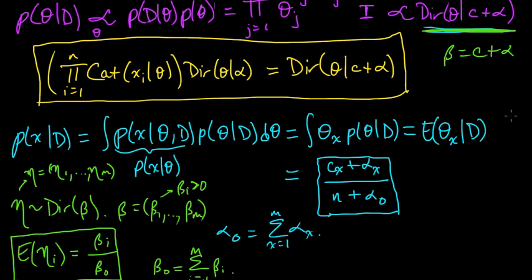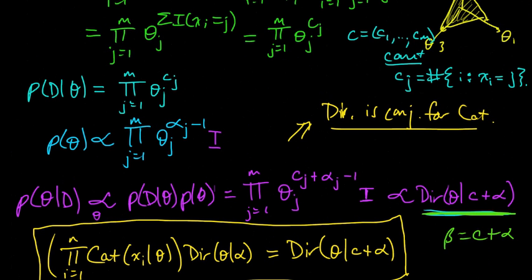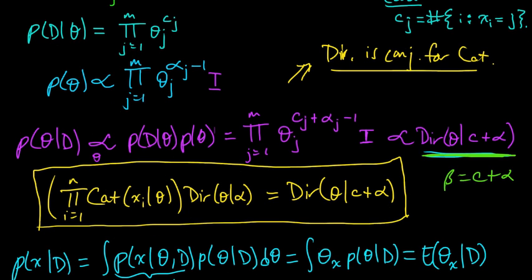So n is the sum of all the c's, because if we sum all the counts up, so if we sum this over j, then each xi has to be equal to some j, so this is just n. You can check that in more detail if that wasn't clear.